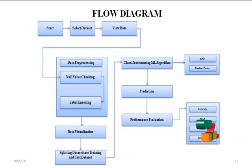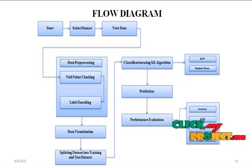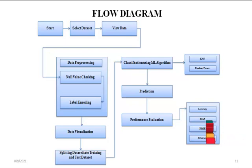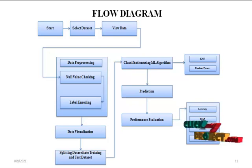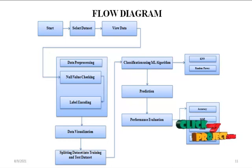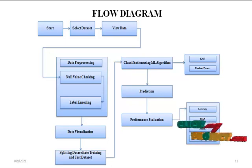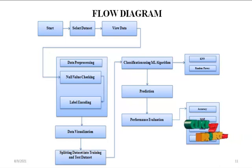Then we move to the feature extraction and feature selection part. We are going to split the data into train and test, and extract features from the dataset as train and test data. After that, we classify the data using machine learning algorithms — specifically KNN and Random Forest — applying the regression form to get prediction results.